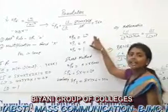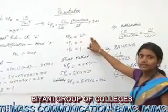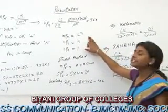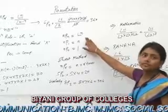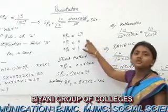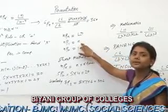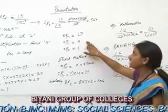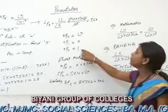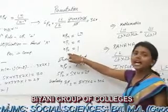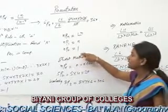The value of factorial 0 is 1. If the value of R is equal to N, then permutation NPn is equal to factorial N. If the value of R is equal to 1, then NP1 is equal to N. And if the value of R is equal to 0, then NP0 is equal to 1.